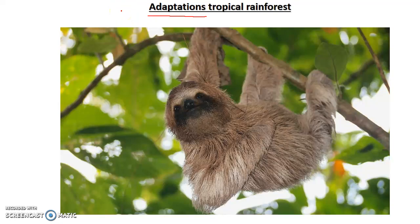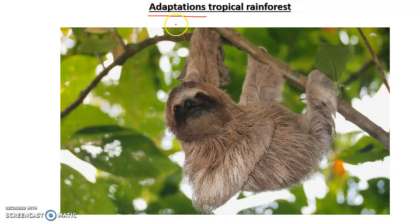I'm going to talk about adaptations and how plants and animals adapt to survive in harsh environments. In this unit we are looking at hot deserts and tropical rainforests. A tropical rainforest is a harsh environment because it is very hot and very wet.